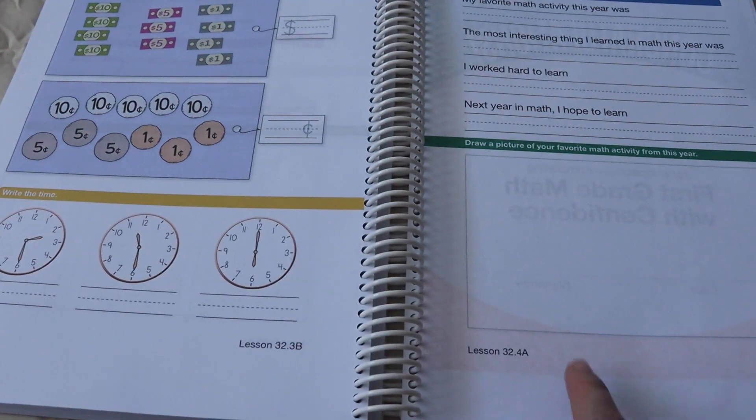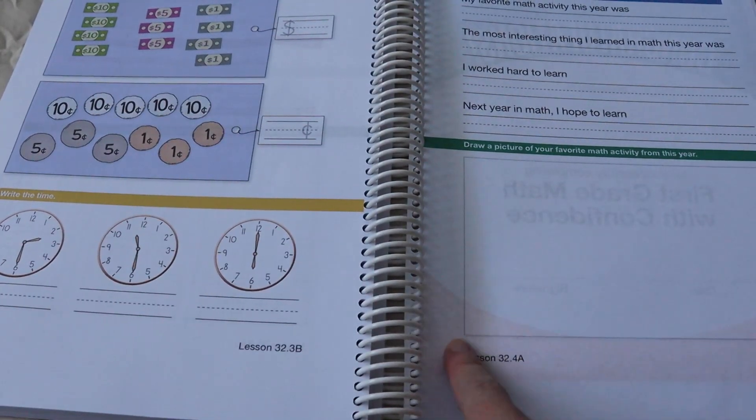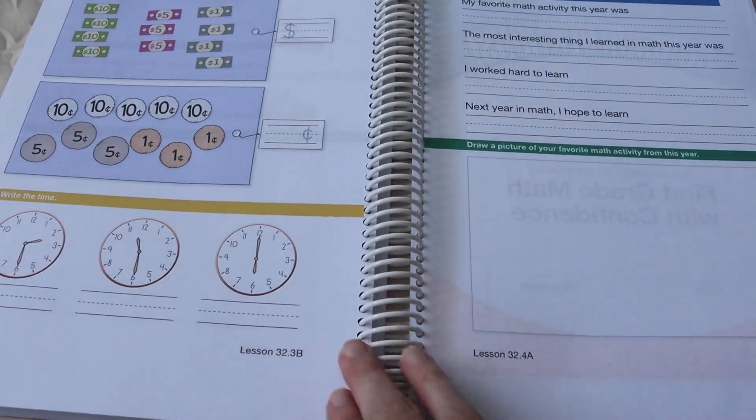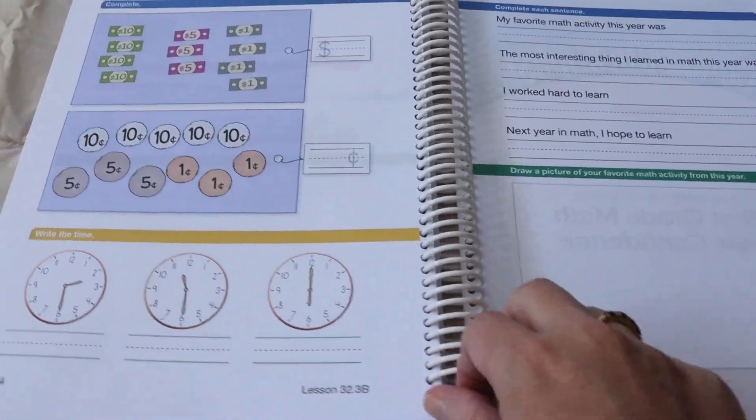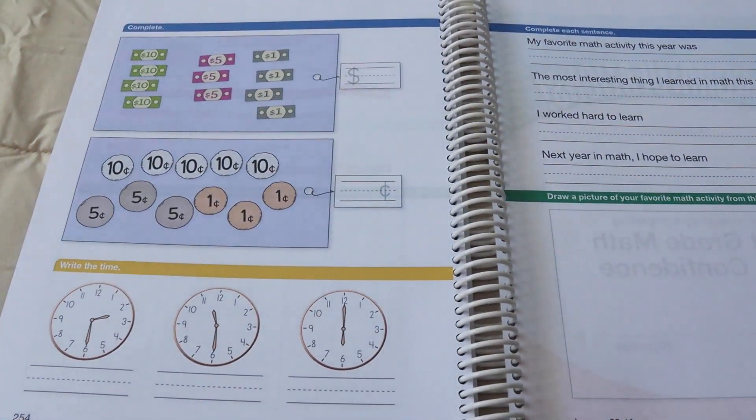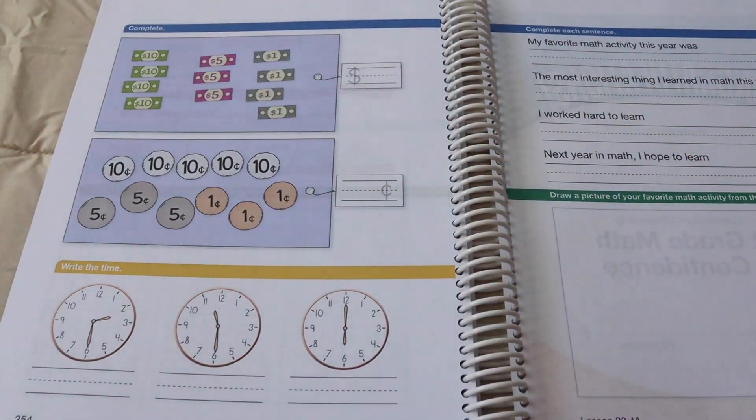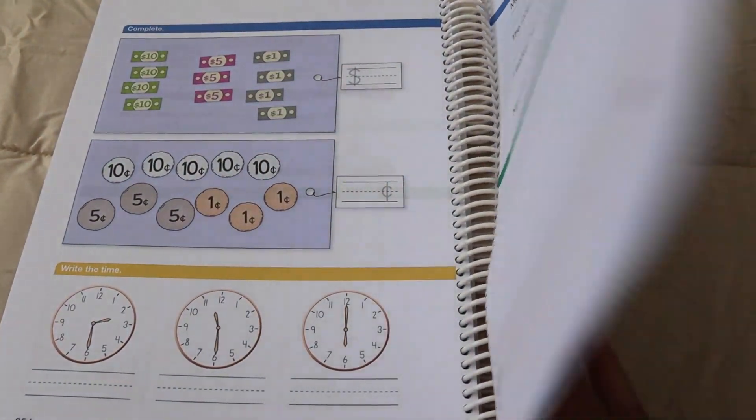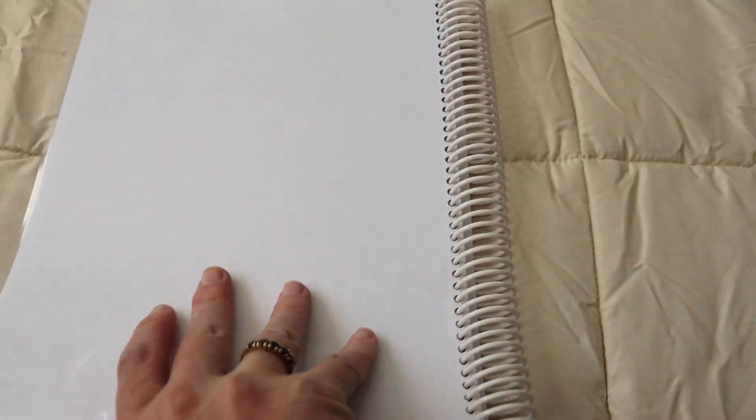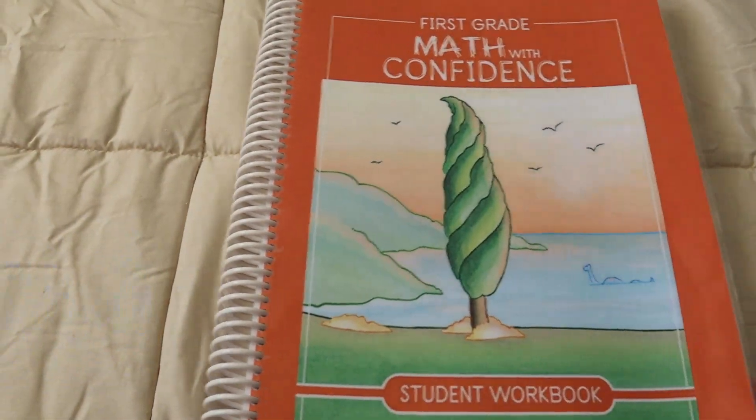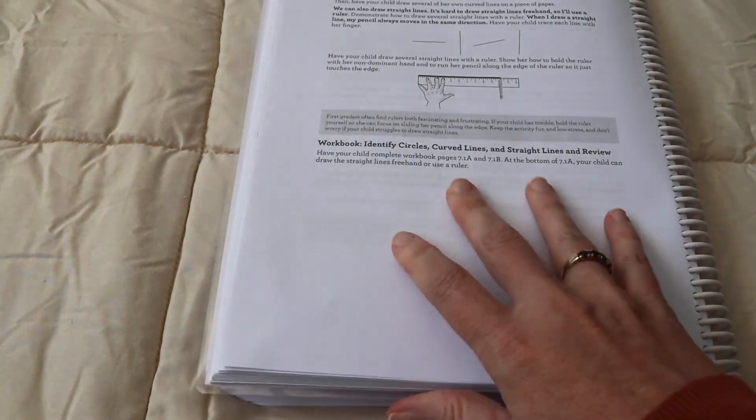Something I wanted to point out is that there are only 32 weeks worth of work in this math curriculum. So that gives you time then if your child needs reinforced learning, they need to go over concepts some more, that gives you plenty of time. Or you can add in additional resources to sort of bulk out your year.